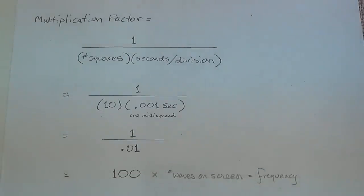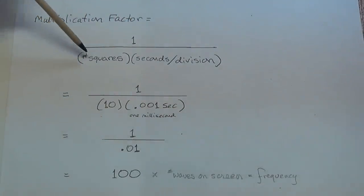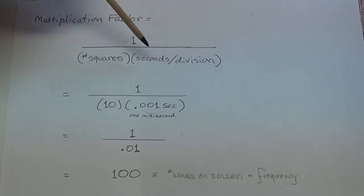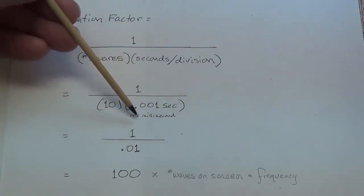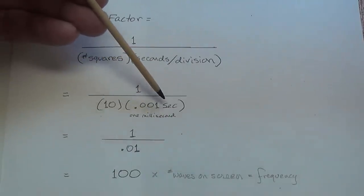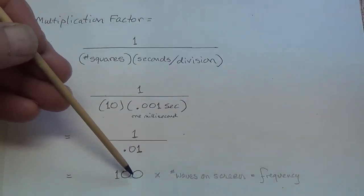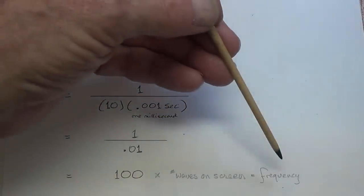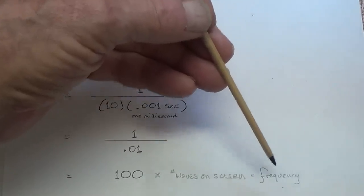For those who prefer a mathematical way to calculate the frequency based on the number of waves on the scope screen, this equation will work: it's one divided by the number of squares on the screen — which will almost always be ten — times the setting on the seconds per division knob. If it's one millisecond, you enter that value as a decimal: 0.001 or one one-thousandth of a second. Do the multiplication then the division to get the correction factor, then multiply the correction factor by the number of waves on the screen to get the frequency. If you saw ten waves on the screen, the frequency is one thousand cycles per second.